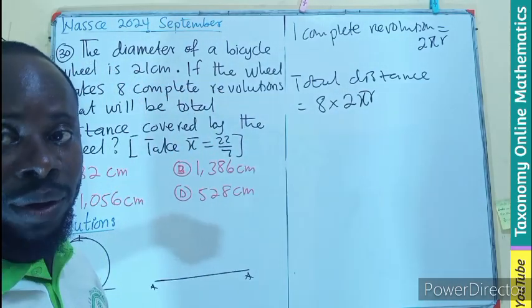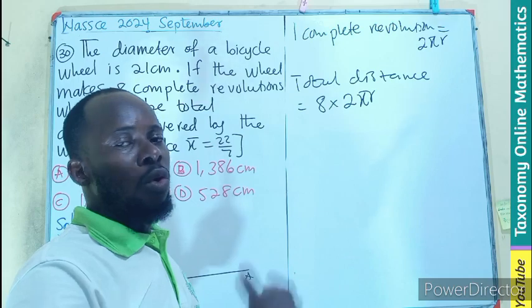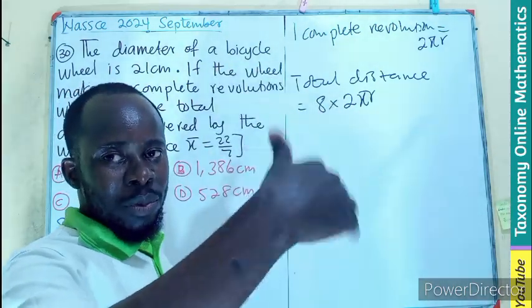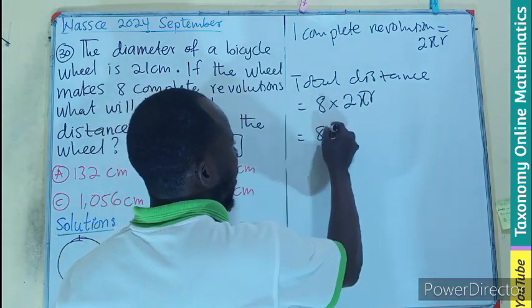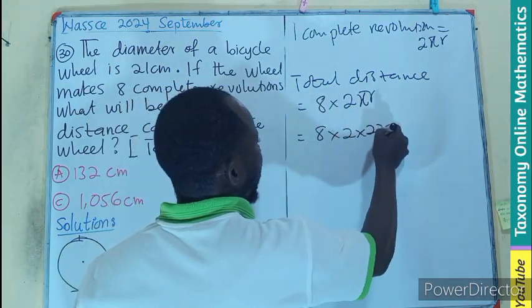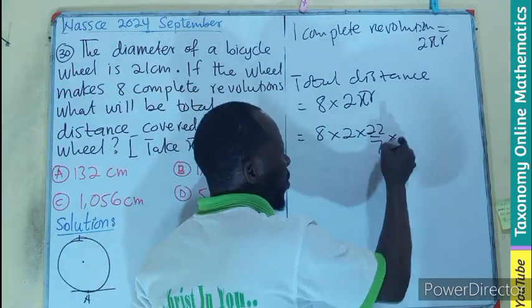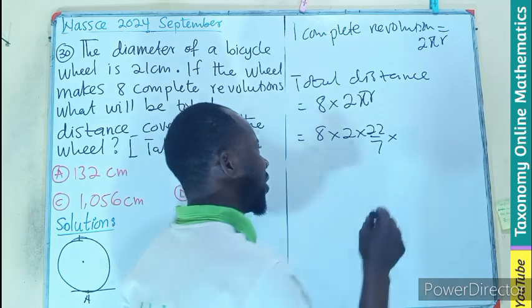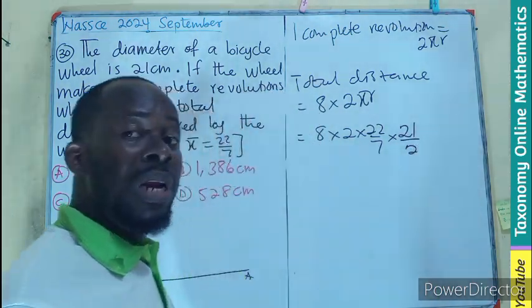That's the distance you are looking for. When a bicycle wheel makes 1 complete turn, that gives us a circumference. 8 different times. So let's do a substitution: 8 times 2, 22 over 7 as the pi given to us. What is radius? Radius is diameter divided by 2, meaning the 21 we have been given divided by 2.